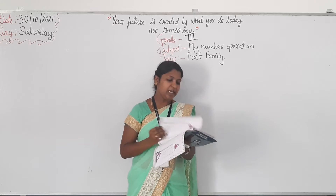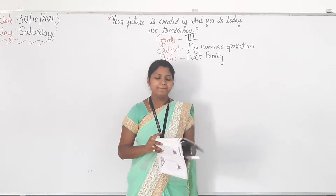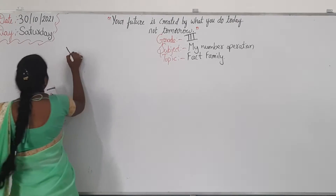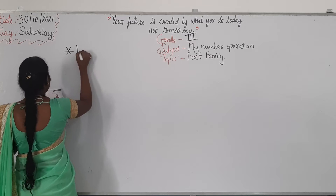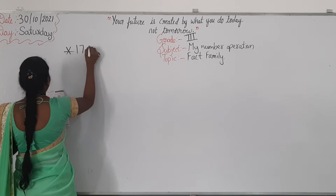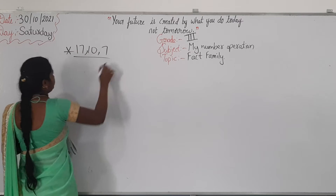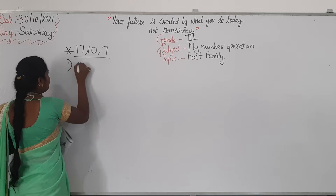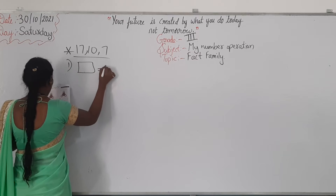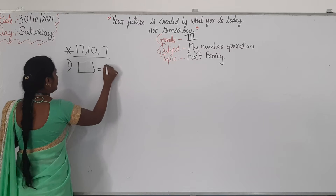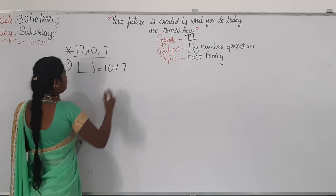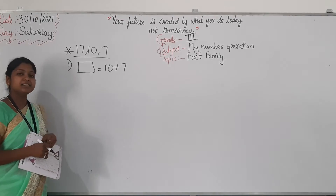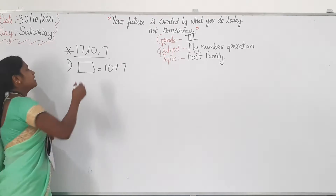In that page number — page number 70 you have read. So, open page number 80. See fact family of 70, 10, 7. The question is: blank box equals 10 plus 7. So, what is 10 plus 7? 10 plus 7 is 17.